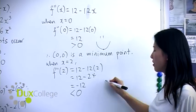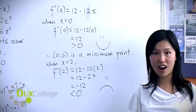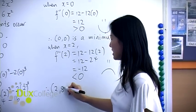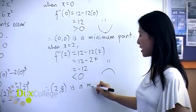Now since it's negative, we would cry. And when you cry, you have a maximum point. So therefore, (2,8) is a maximum point.